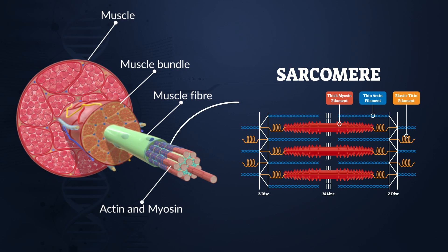Let us look at the structure. Each sarcomere is present between two Z lines or Z disc, and we see that the actin filaments are attached to the Z line. In between the actin filaments, in the centre of the Z lines, there is presence of the myosin filaments. We also have thread-like proteins present in the centre called the M line, which help in the attachment or holding of the myosin filaments in position.